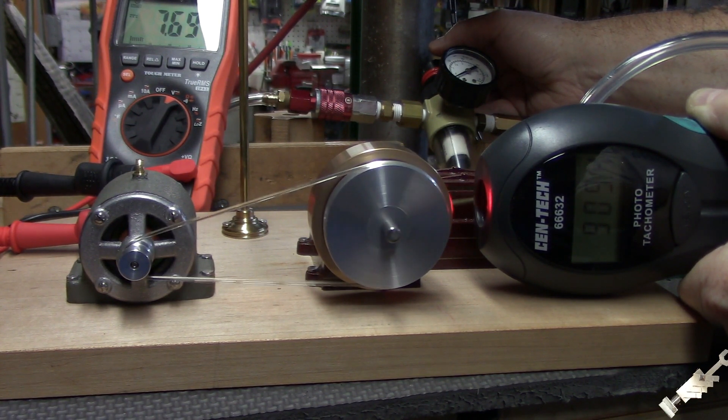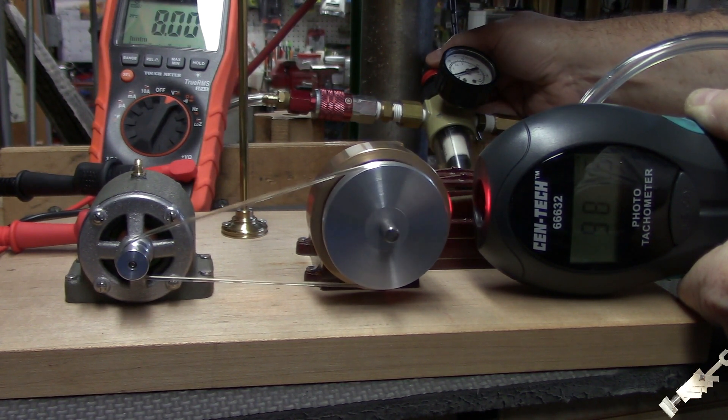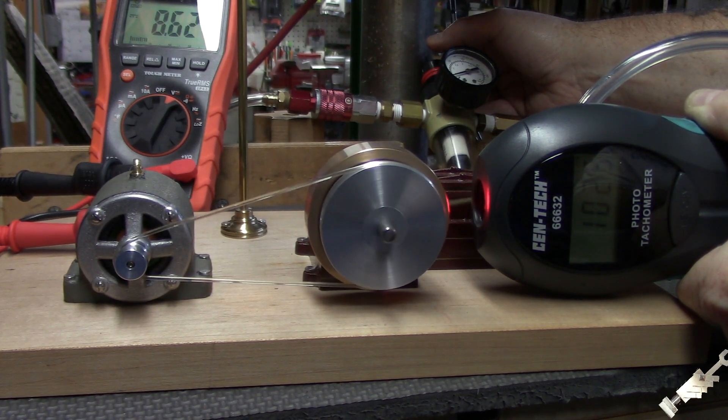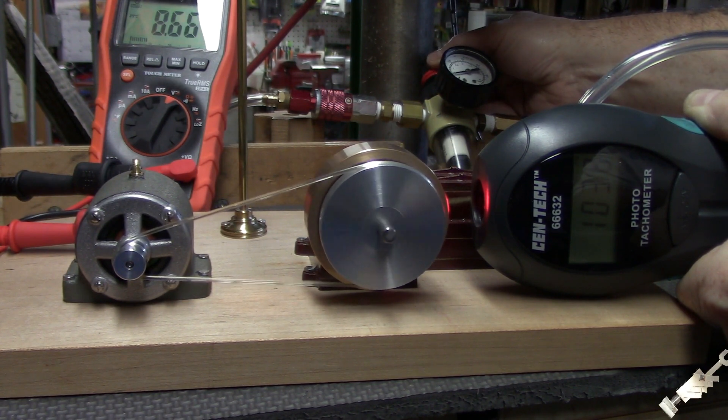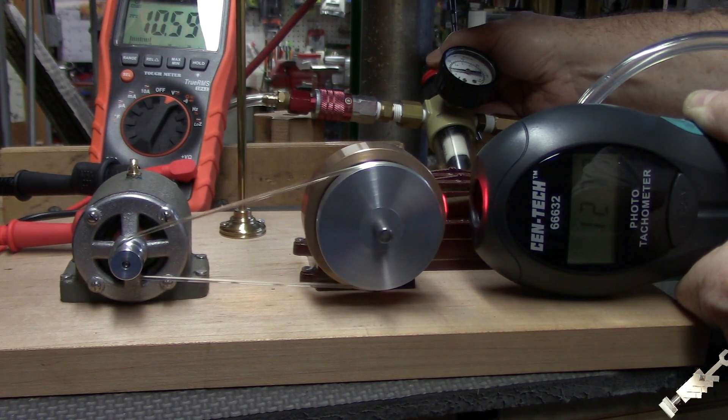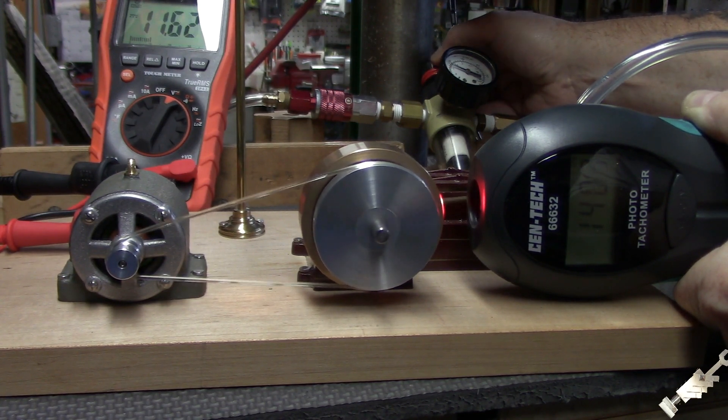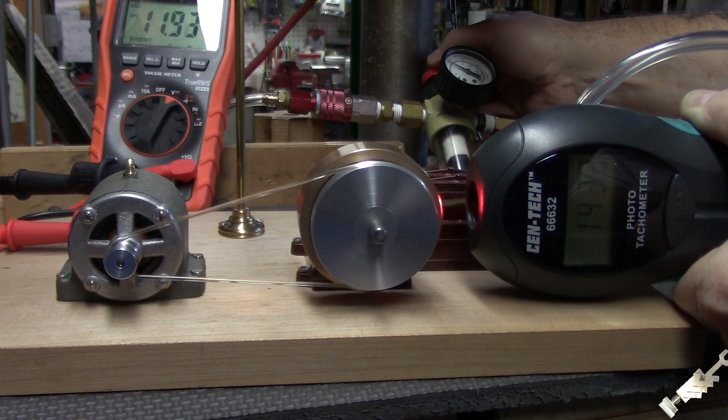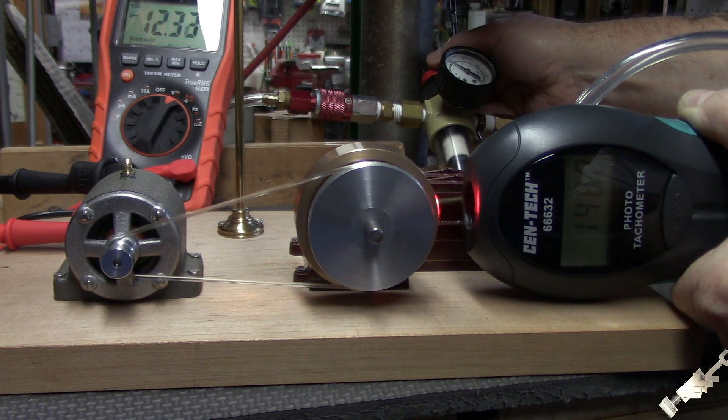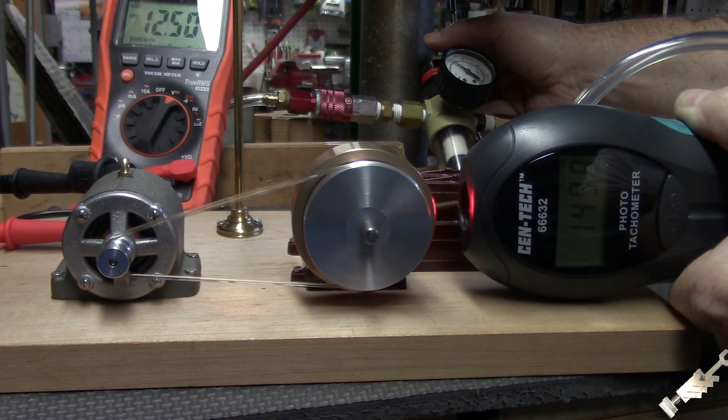A little over 7 and a half volts. Let's go for 1000 RPM. A little over 8 and a half volts. Alright, that's 1500 RPM. At about 1,500 RPM we're getting 12.5 volts.